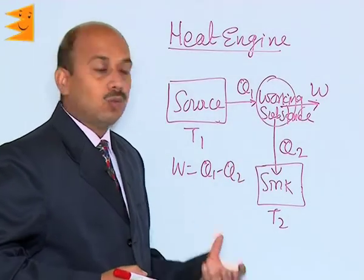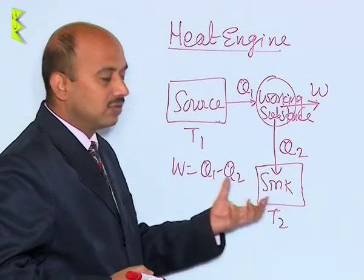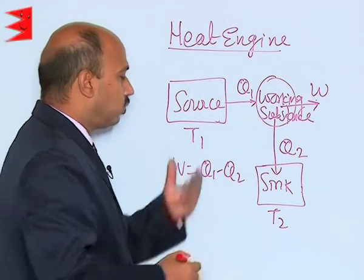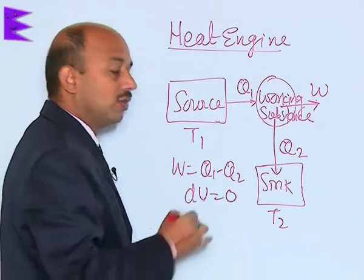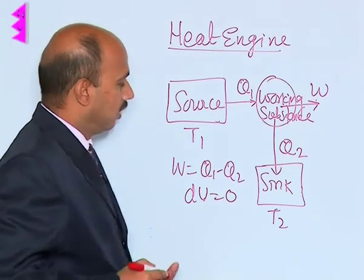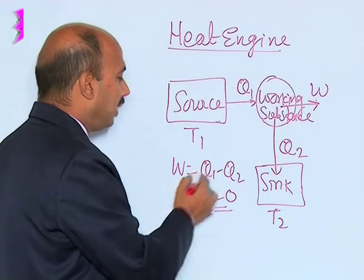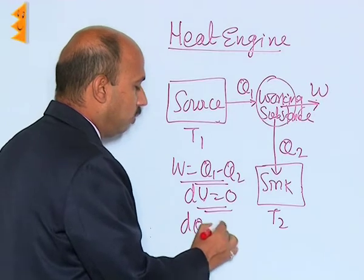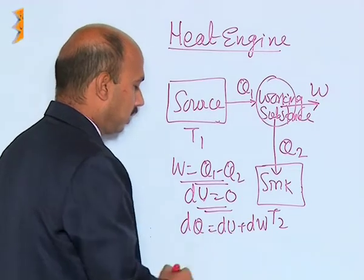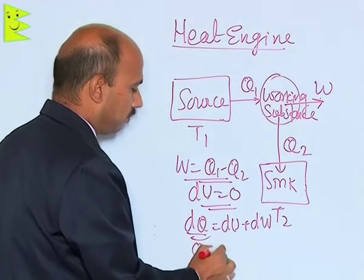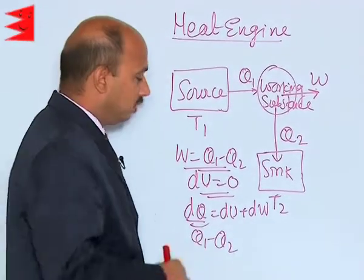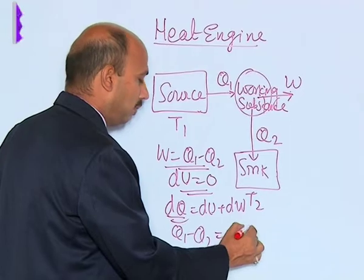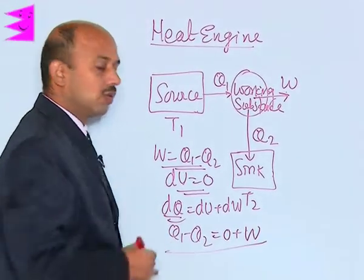The total heat taken was Q1, work done is W, and remaining heat is given to the sink. After giving heat Q2 to the sink, the working substance returns to its initial state, completing one cycle. So dU is equal to 0, because one cycle has been completed. Using the first law, dQ = dU + dW, we get Q1 minus Q2 = 0 + W, which gives W = Q1 minus Q2.